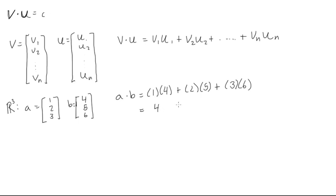And now if we work this out, we get 4 plus 10 plus 18, and we find that to be 22. So there you have it, a dot b is equal to 22. This is just some number, not a vector. And that's how you do it.